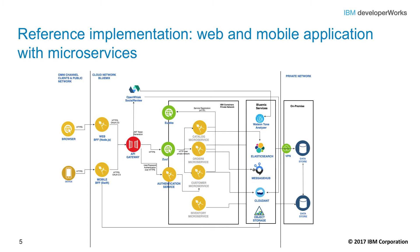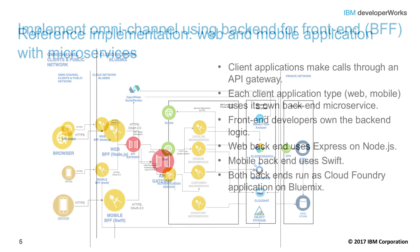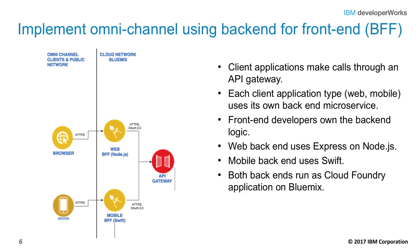The application components are written in Java using Spring Boot. These are very common patterns for creating omni-channel cloud-based applications. In this application, the clients access the application microservices through an API gateway. In the reference implementation, this capability is provided by API Connect in Bluemix. This gateway component supports OAuth, allowing authentication for API requests.